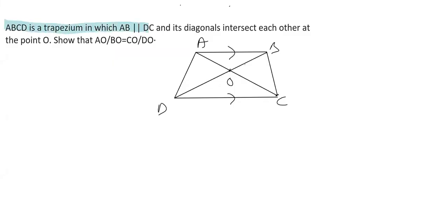In this question, it is given that ABCD is a trapezium where AB is parallel to CD. Its diagonals, AC and BD, intersect at point O. What we have to show here is that AO upon BO is equal to CO upon DO.